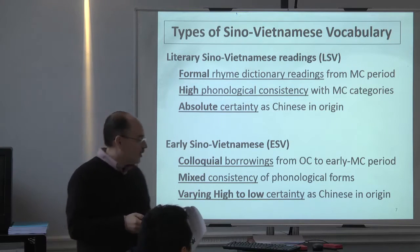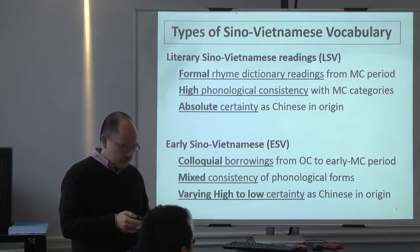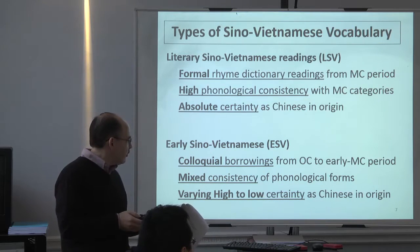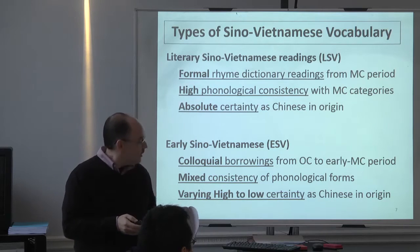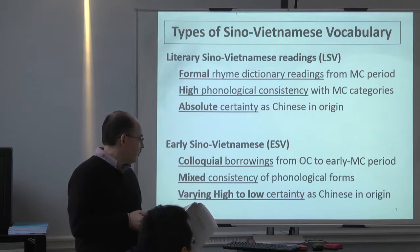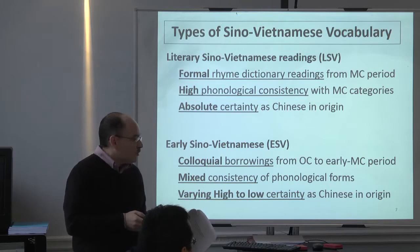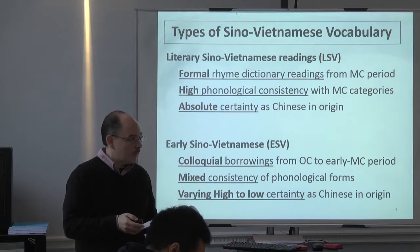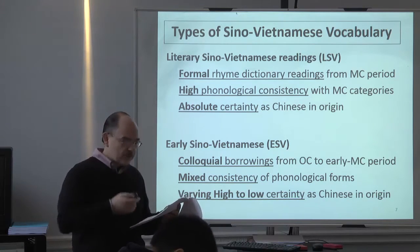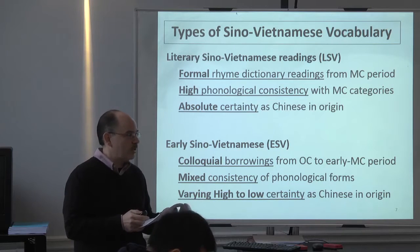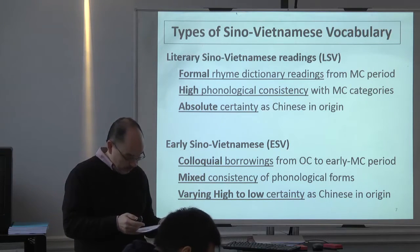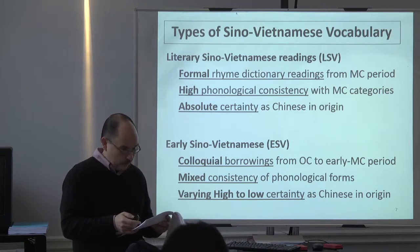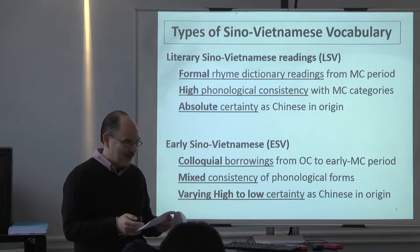Early Sino-Vietnamese — ESV rather than OSV, which I used for a while — is what we focus on. This is largely from spoken transmission. We expect some mixed consistency in phonological forms. There's a degree of high to low certainty, and sometimes you simply can't know. I keep items in the list labeled low certainty, intermediate certainty, or high certainty. It's very rare that I label an Old Chinese form complete certainty, even though in my mind I'm certain.